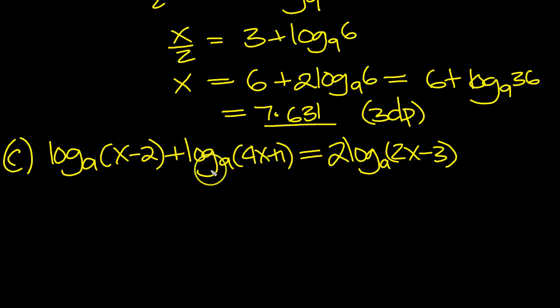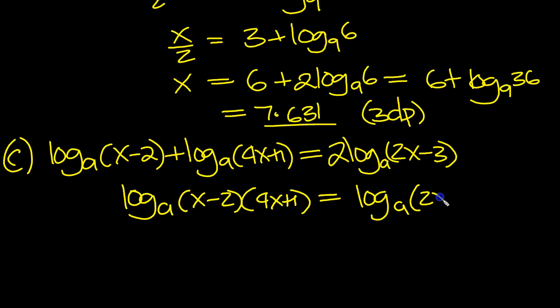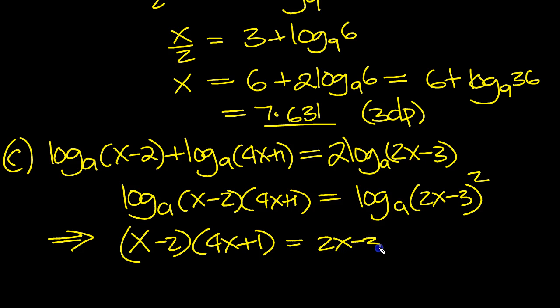So plus 2 times - we've got log a of x minus 2, 4x plus 1 is equal to - and this 2 can come up to be a power - log a of 2x minus 3. 2 swings up to be a power squared. So now that implies if the logs are the same, the values will be the same. 4x plus 1 times x minus 2 must equal 2x minus 3 squared.